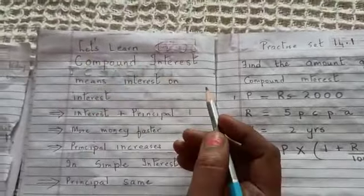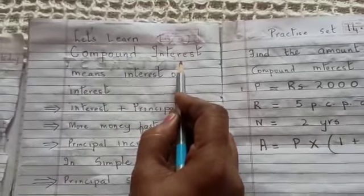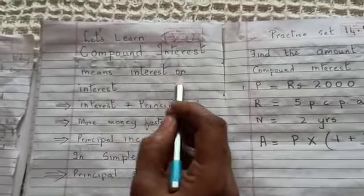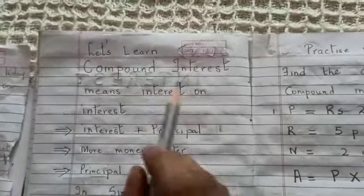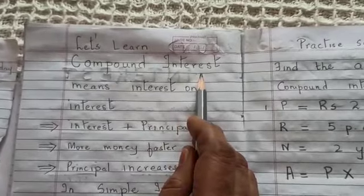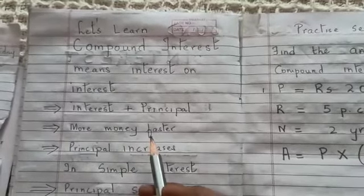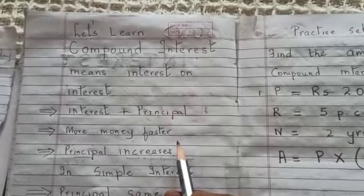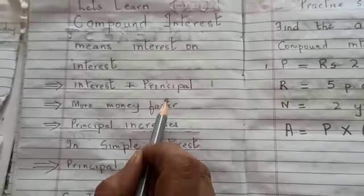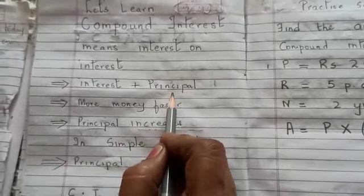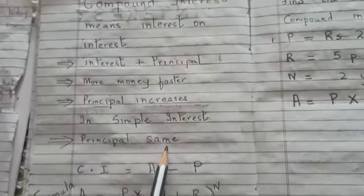Coming to the topic of today: compound interest, which means interest on interest. Because when we deal with compound interest, the principal always increases. The money we get, that is the increased money, is always faster because in compound interest the interest is added to the principal, whereas in simple interest the principal remains the same.